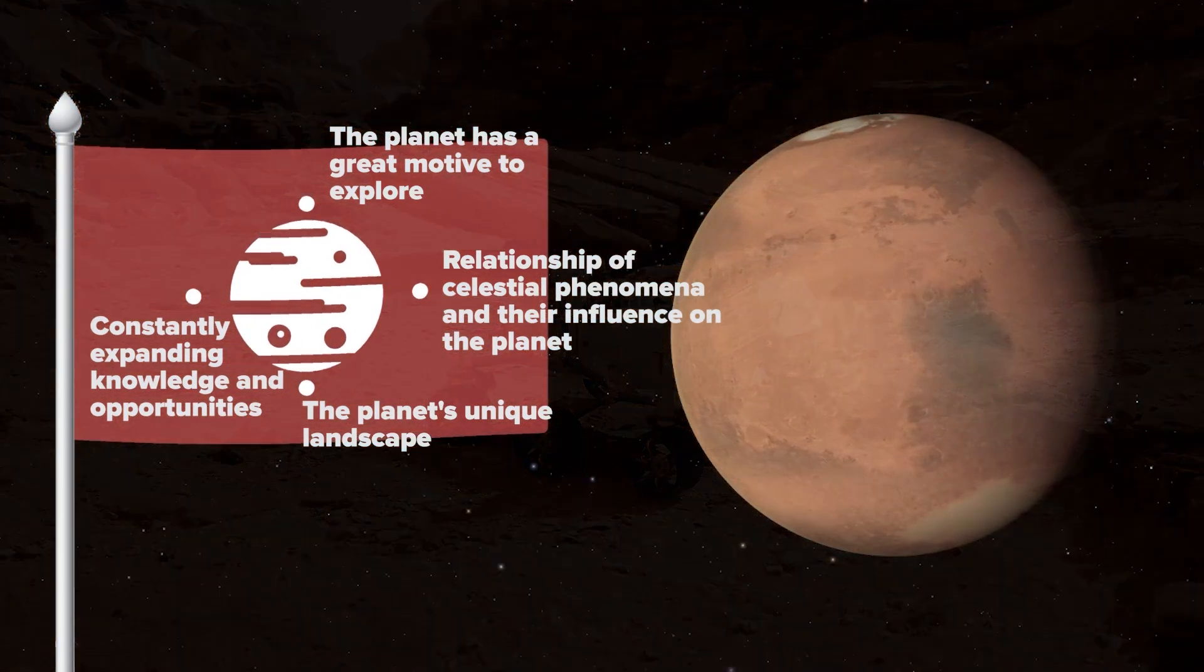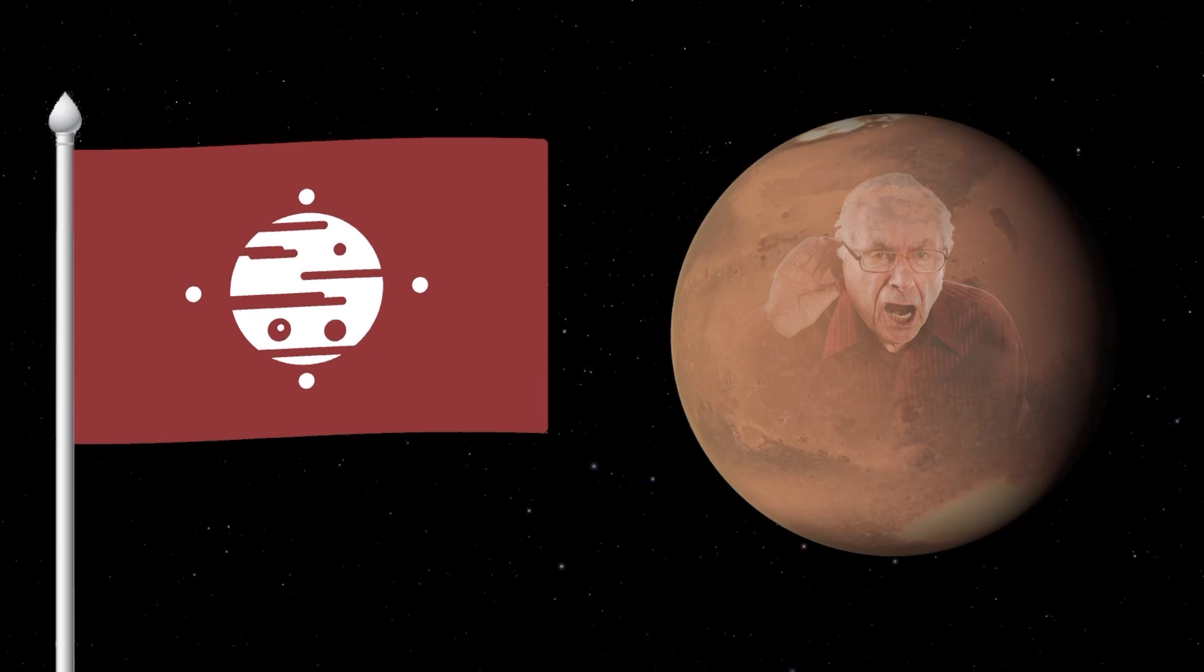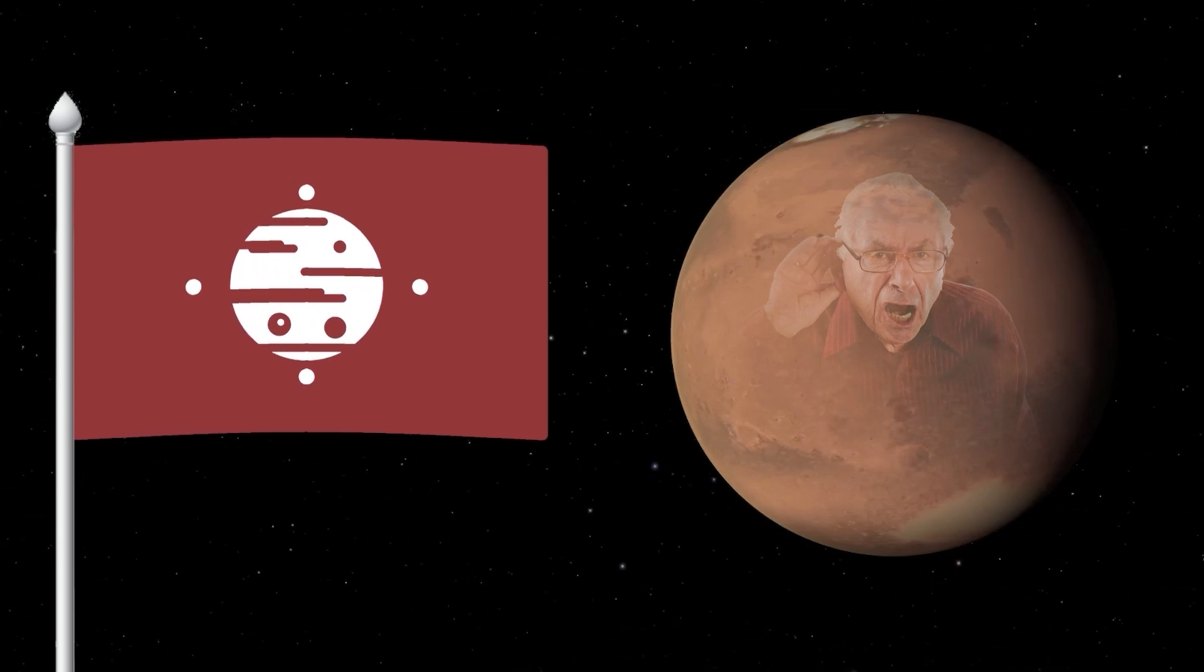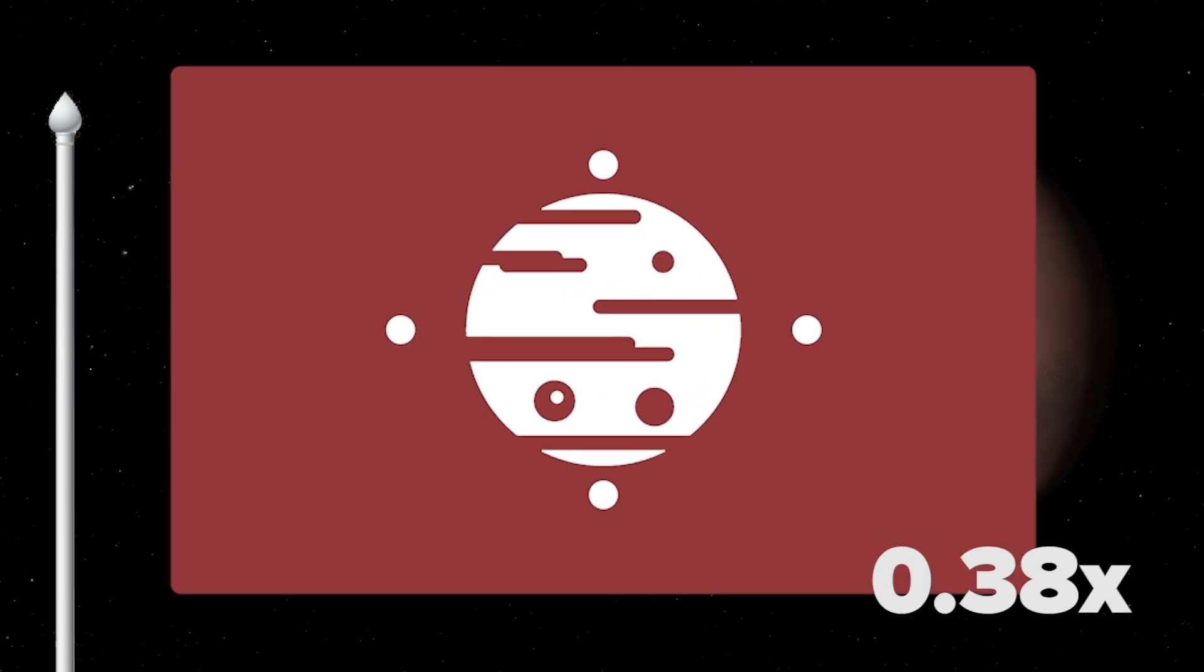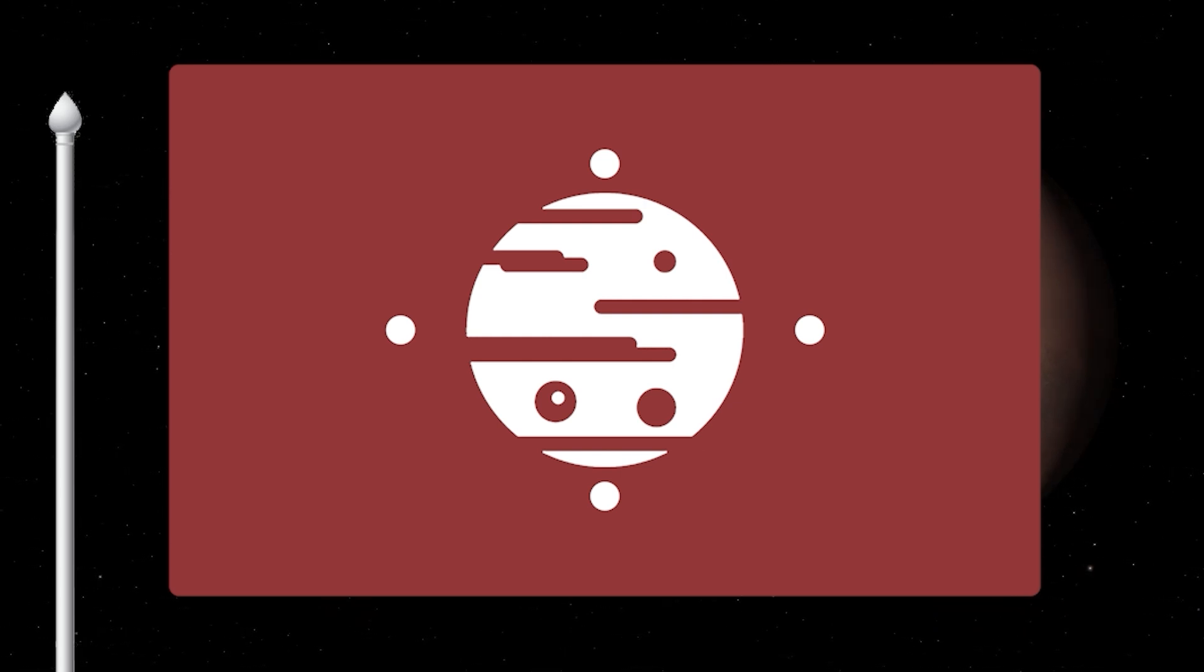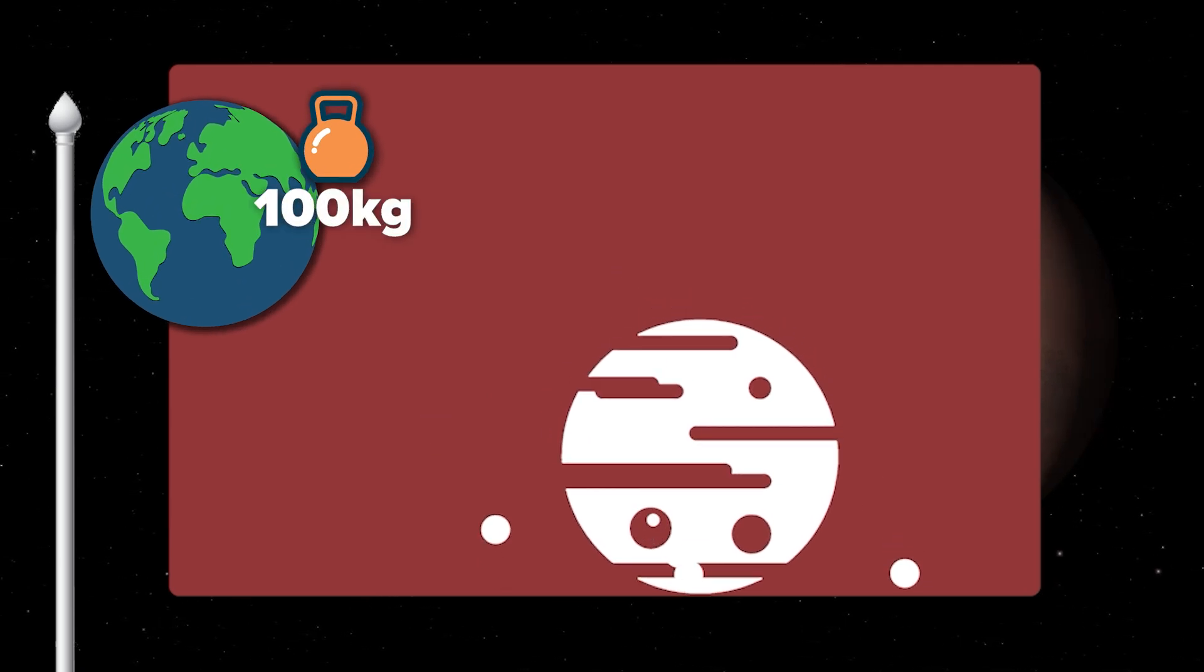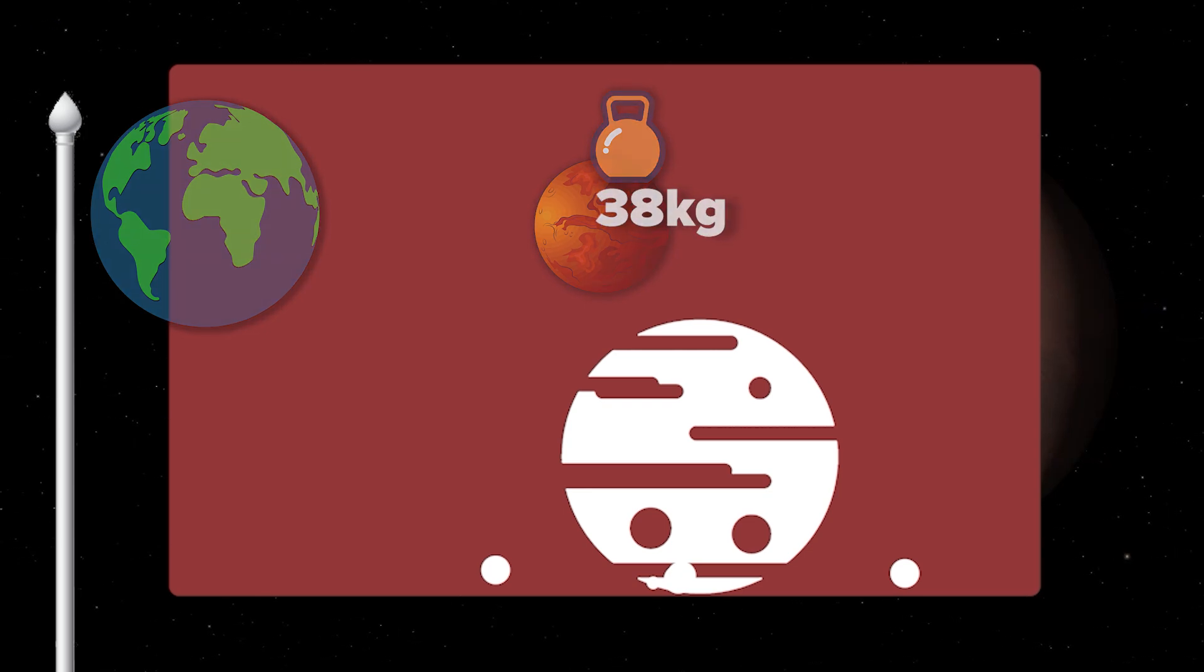Because of gravity on Mars, sounds propagate differently. Sounds will be weaker and less distinguishable compared to Earth because of the lower density and thinness of Mars' atmosphere. The gravitational force on Mars is weaker than on Earth, which means that objects on Mars will experience less gravitational force. For example, an object with a mass of 100 kilos on Earth will experience a gravitational force of about 38 kilograms on Mars.